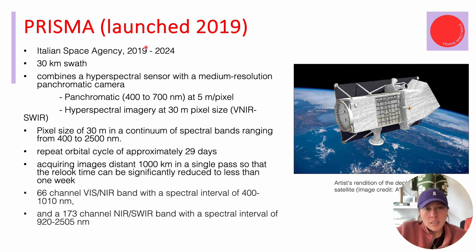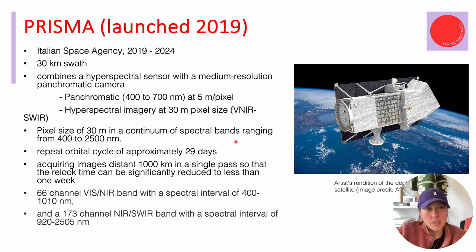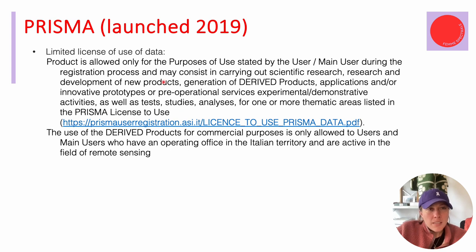PRISMA was launched in 2019 by the Italian Space Agency and was supposed to run until 2024. It has a 30 km swath, 30 meter pixel size with a panchromatic band at 5 meters, covering 400 to 2,500 nanometers, with approximately 29 days repeat time. Licenses are limited — you can apply for imagery for research projects by applying specifically. If you're a company based in Italy you can also request access, but otherwise there are no commercial licenses.